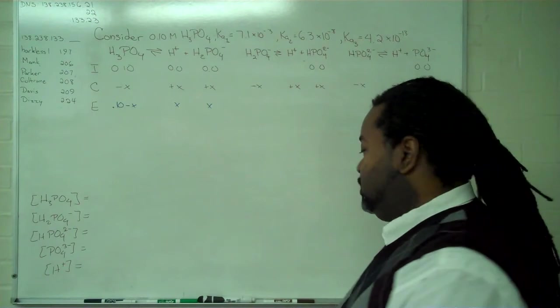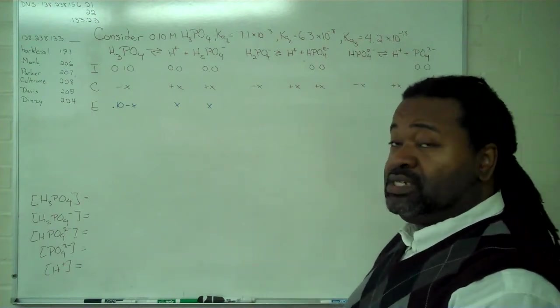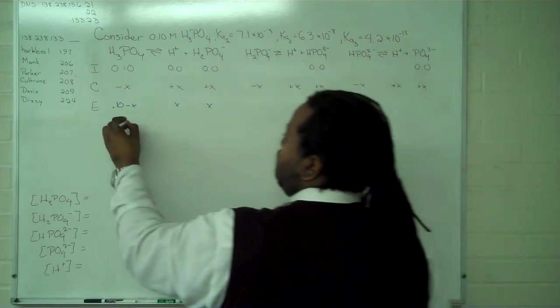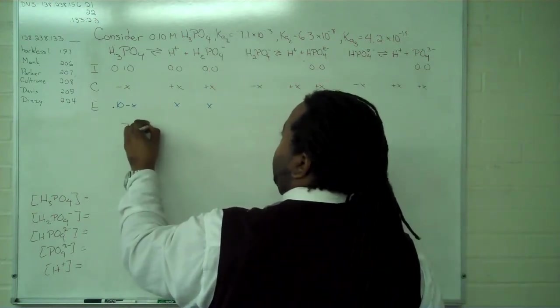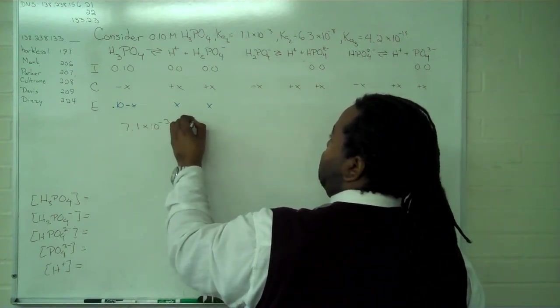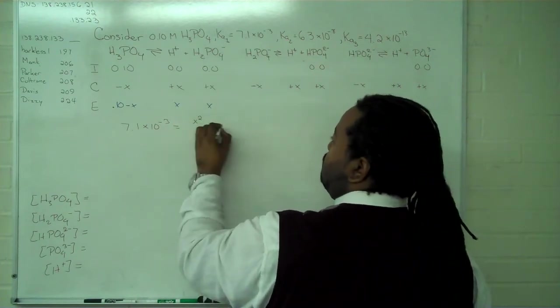So now it's possible to write out the equilibrium constant expression, substituting in our various quantities for our first dissociation. So we have 7.1 times 10 to the minus 3 is equal to the hydrogen concentration times the H2PO4-, that's squared,